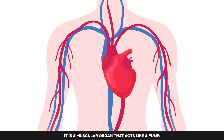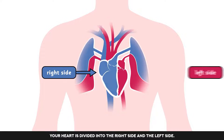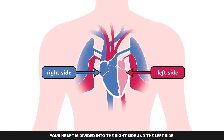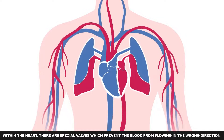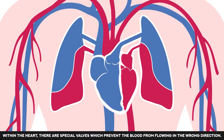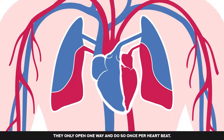It is a muscular organ that acts like a pump. It is about the size of your fist and located in the chest to the left of centre. Your heart is divided into the right side and the left side. This keeps the oxygenated and deoxygenated blood apart. Within the heart, there are special valves which prevent the blood from flowing in the wrong direction — they only open one way and do so once per heartbeat.